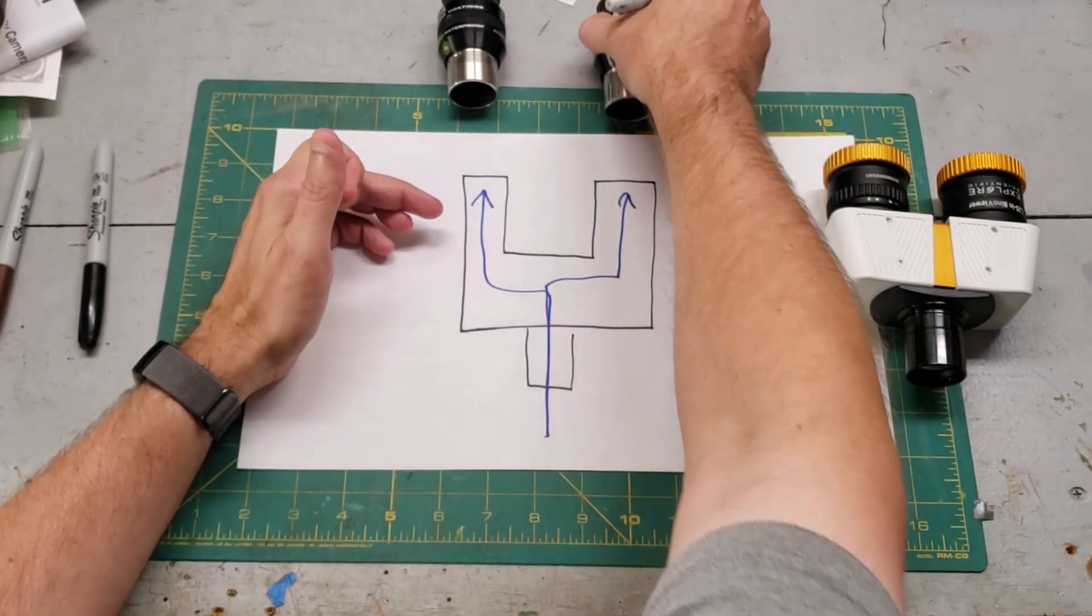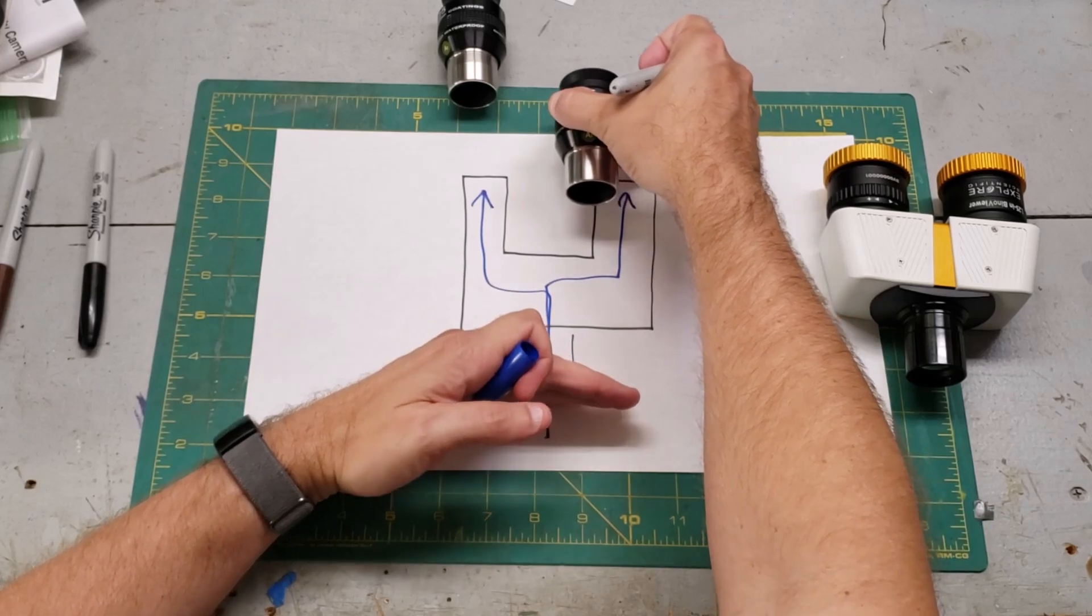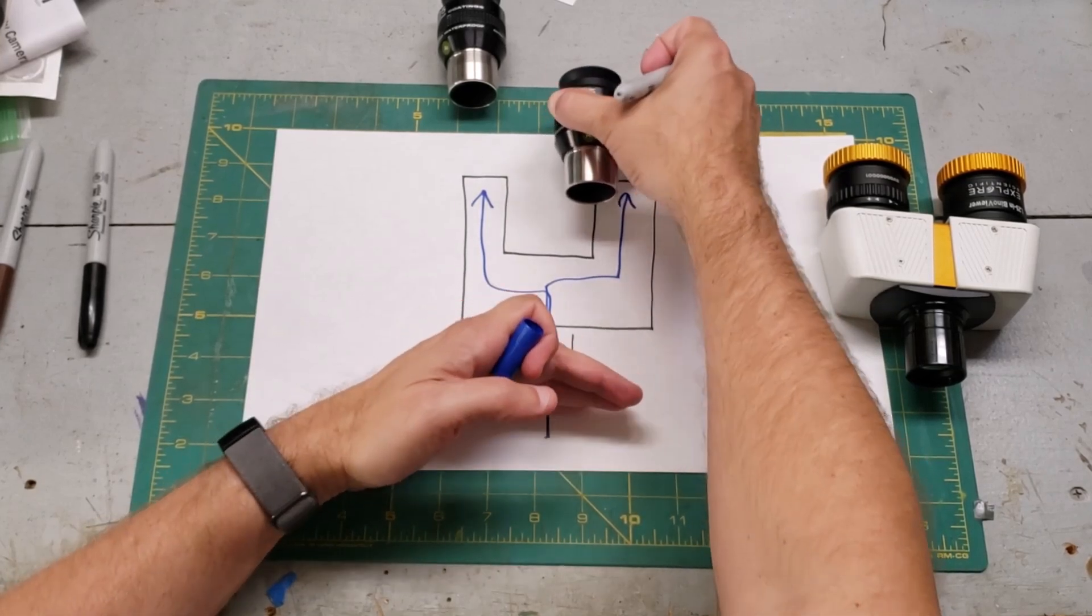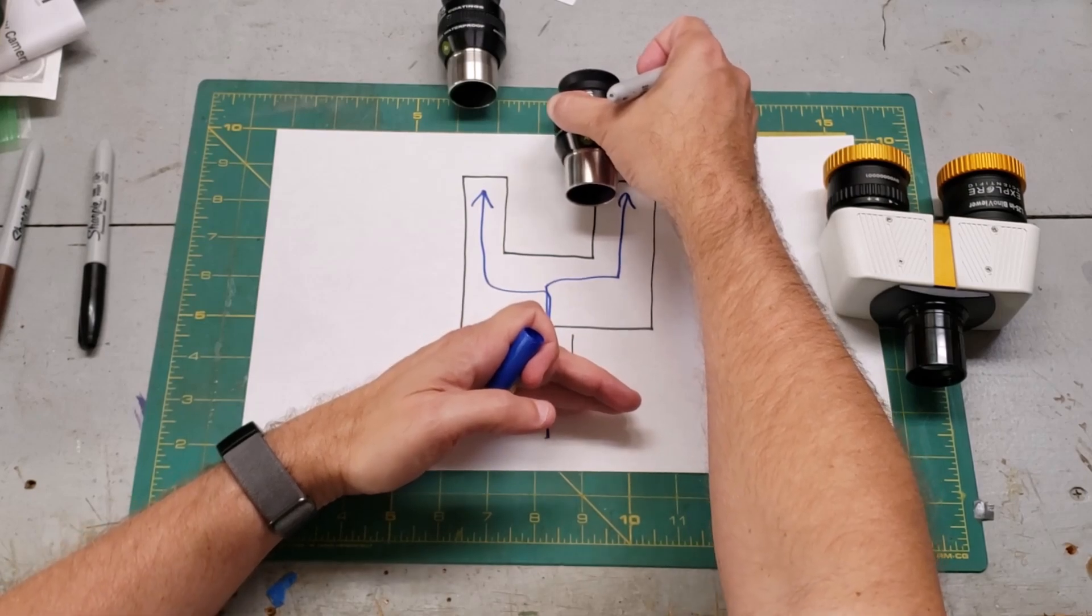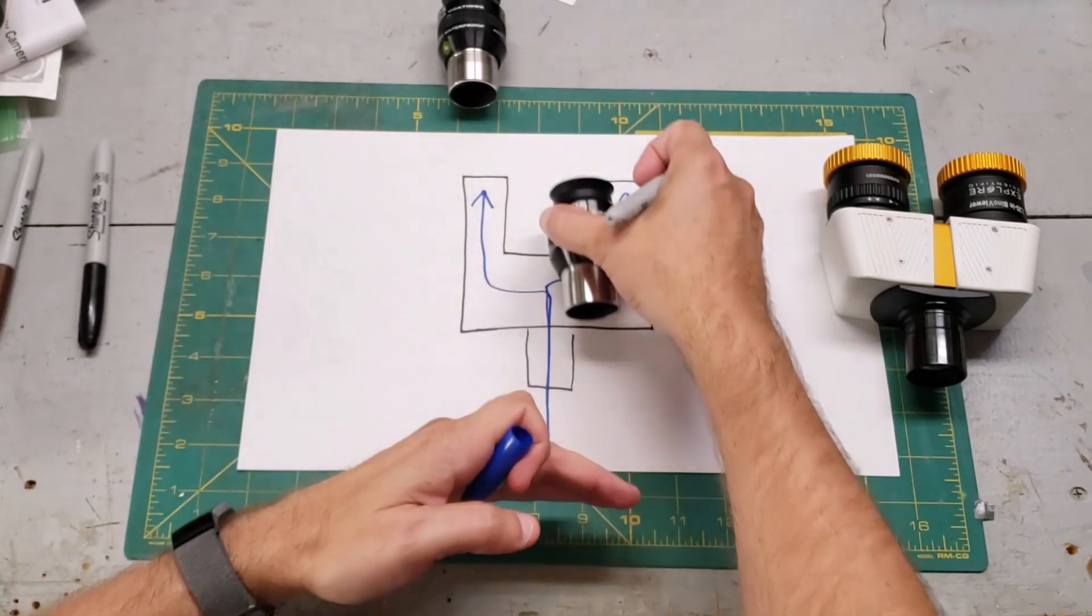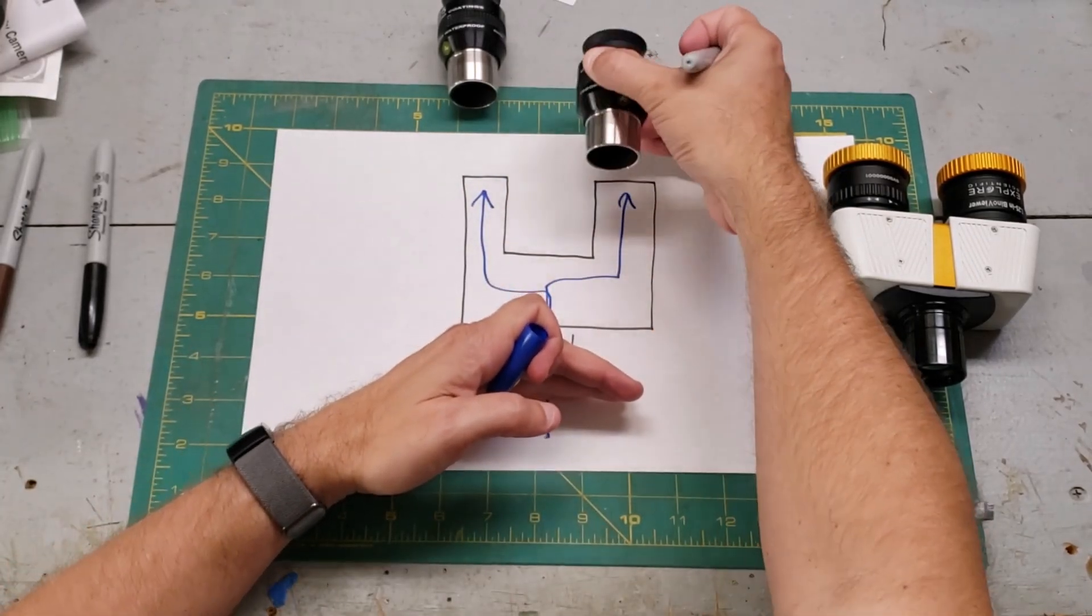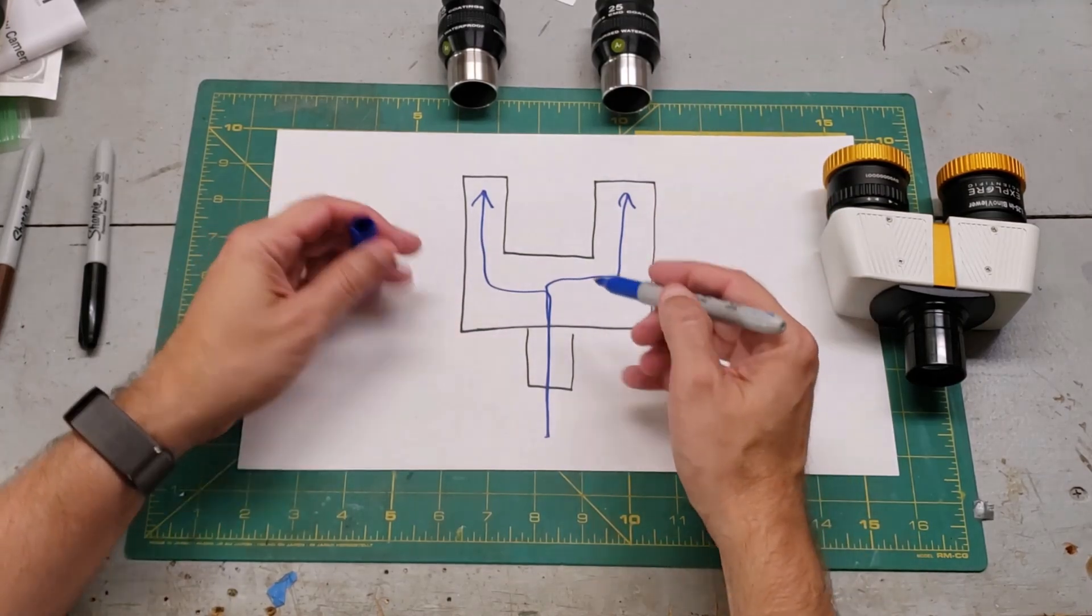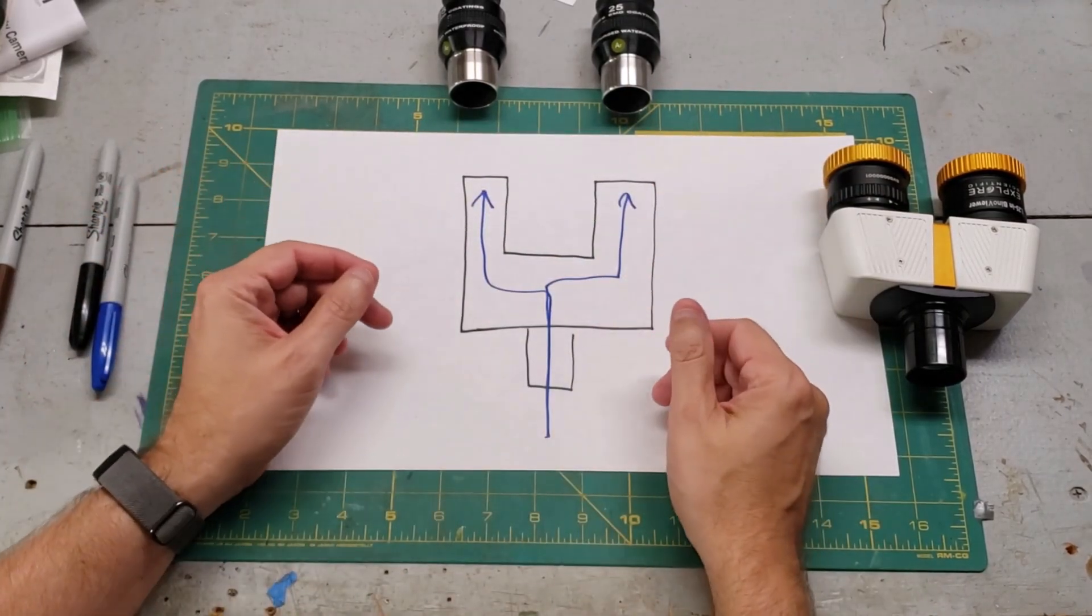Now, that is actually a problem. You can imagine holding an eyepiece four inches above the focuser tube and trying to reach focus. For most reflectors, that's impossible. A lot of refractors have very long focus tubes that can move very far in and out, so this generally is not a problem for refractor-style telescopes. So, how do you use bino viewers in a reflector-style telescope?